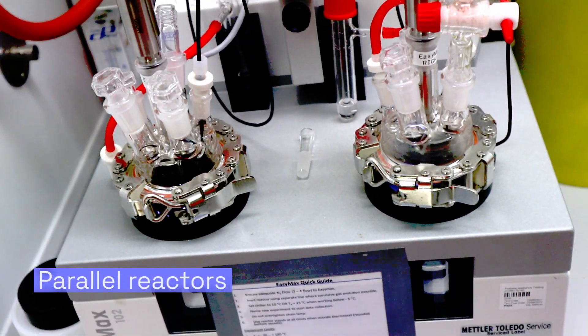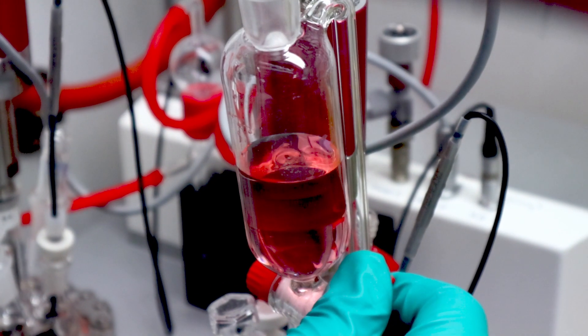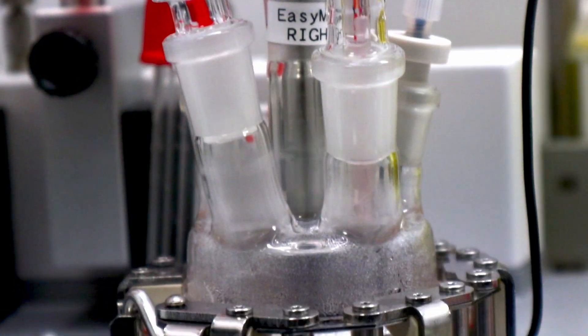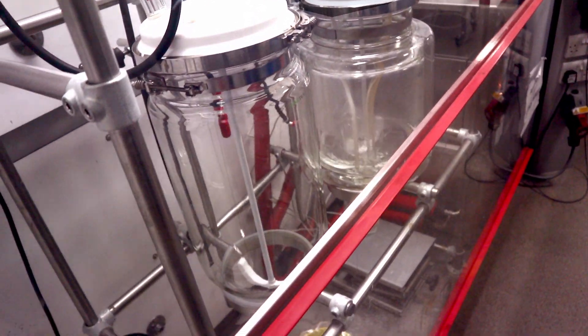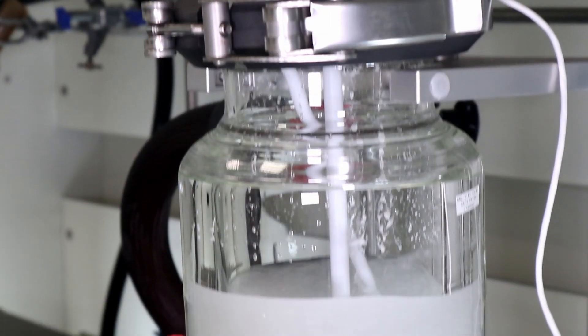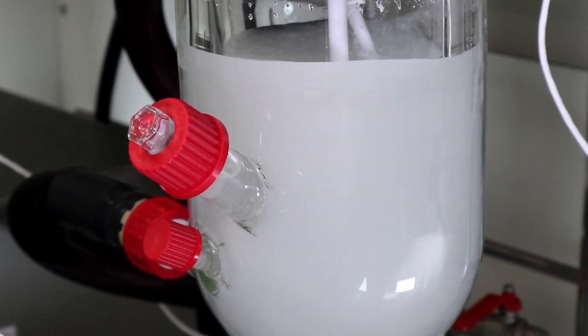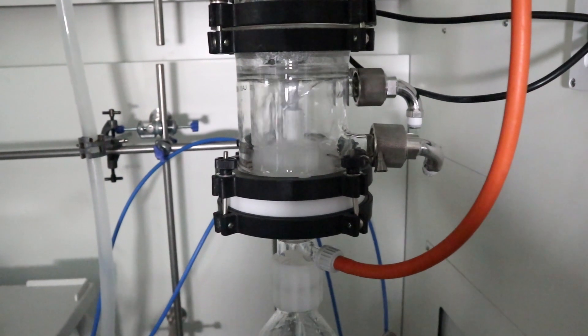Our chemical development begins with either development of an existing route or a scouting exercise to identify a new synthetic route. Our goal is to identify and develop a route of synthesis that is safe, economical, and practical for manufacture at large scale. Where possible, we replace operations that are not suitable at large scale, such as chromatography, with crystallization-based isolation and purification.